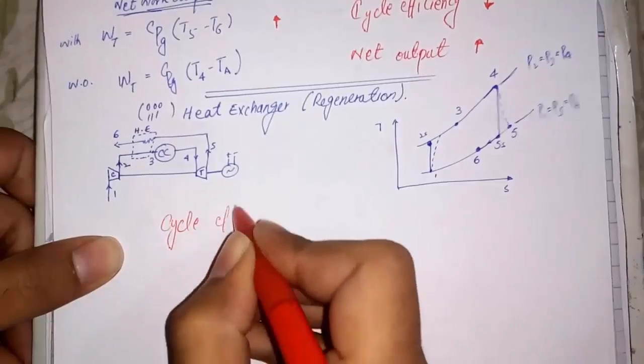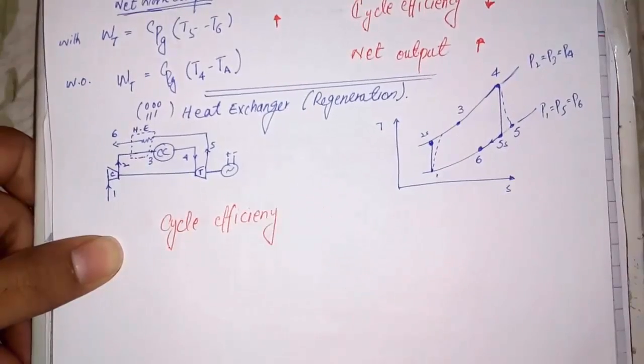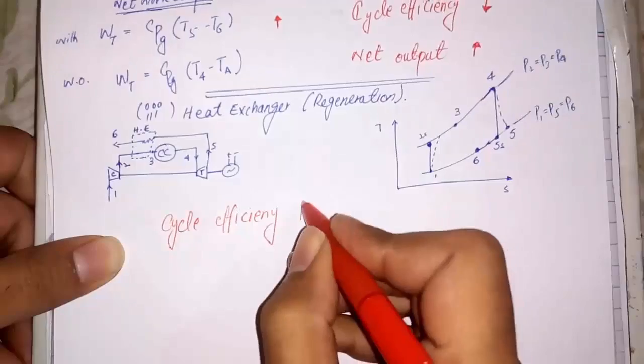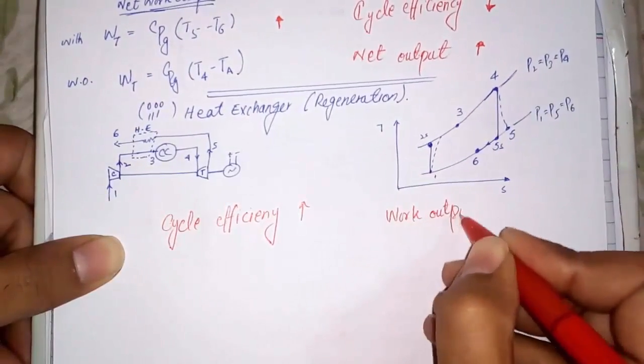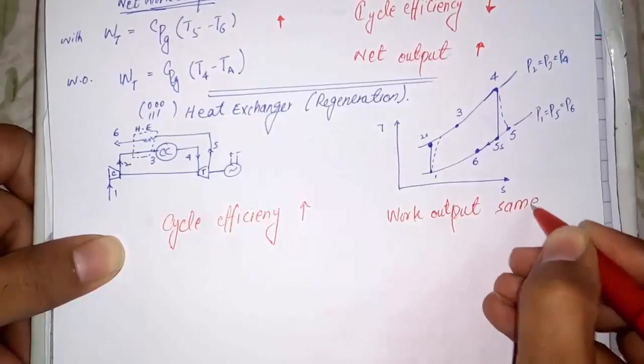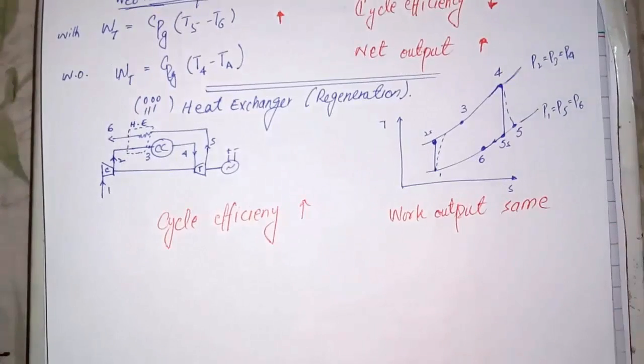By using this method, we can increase the cycle efficiency as we have to provide less heat in combustion chamber, and we can raise temperature by recycling the heat. In this method, burden is remain same.